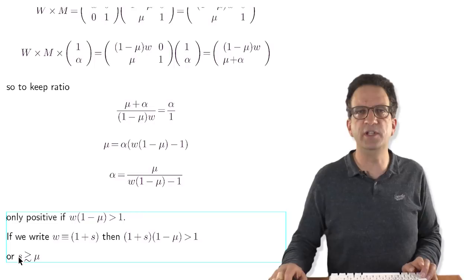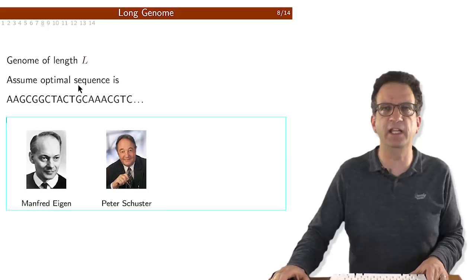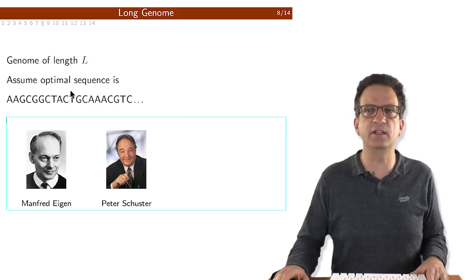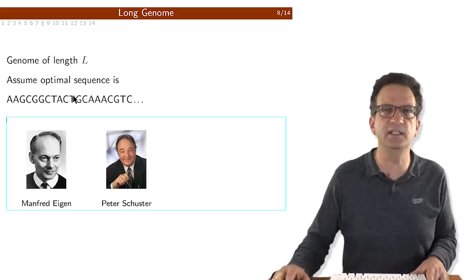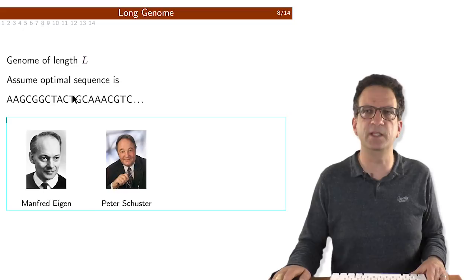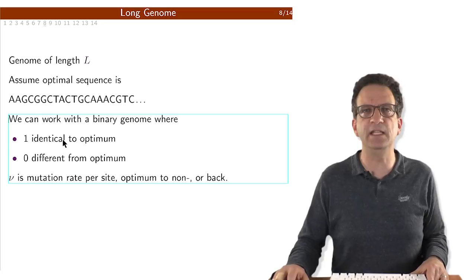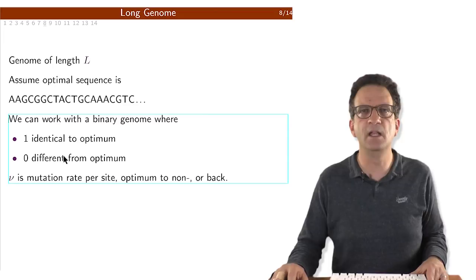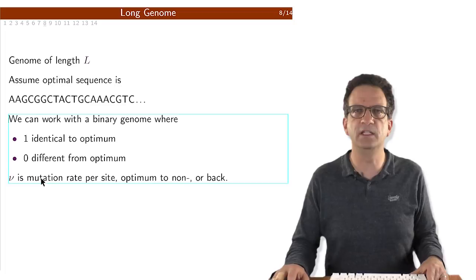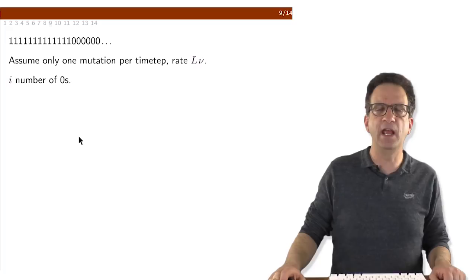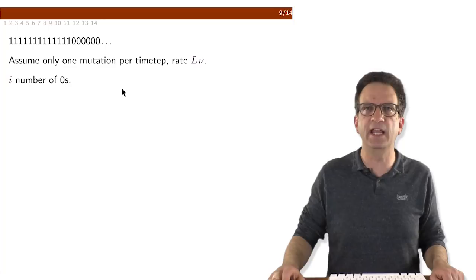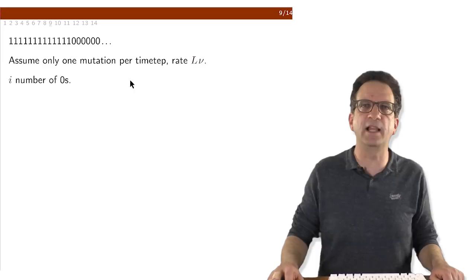Now let's switch to the representation as originally introduced by Manfred Eigen and Peter Schuster, who looked at a genome of length L with 4^L types. For simplicity, we use a binary sequence: 1 means the site is identical to the optimum, 0 means it's different. Nu is the per-site mutation rate, and we assume one mutation per time step. We call i the number of zeros in the sequence and look at the probability to go from i zeros to i+1: it's (L−i)×nu.